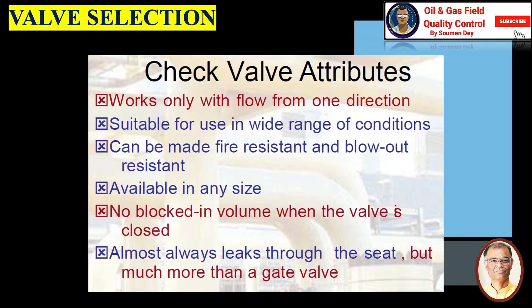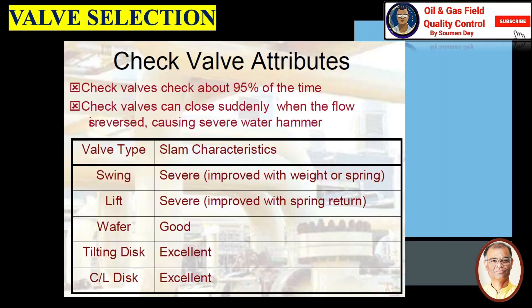Check valve: as the name suggests, it checks the flow in one direction. It works only with flow from one direction, suitable for use in a wide range of conditions, can be made fire resistant and blowout resistant, available in any size. There is no blocked-in volume when the valve is closed, but it almost always leaks through the seat — much more than a gate valve. Check valve checks about 95% of the time. Check valve can close suddenly when flow reverses, causing severe water hammer.